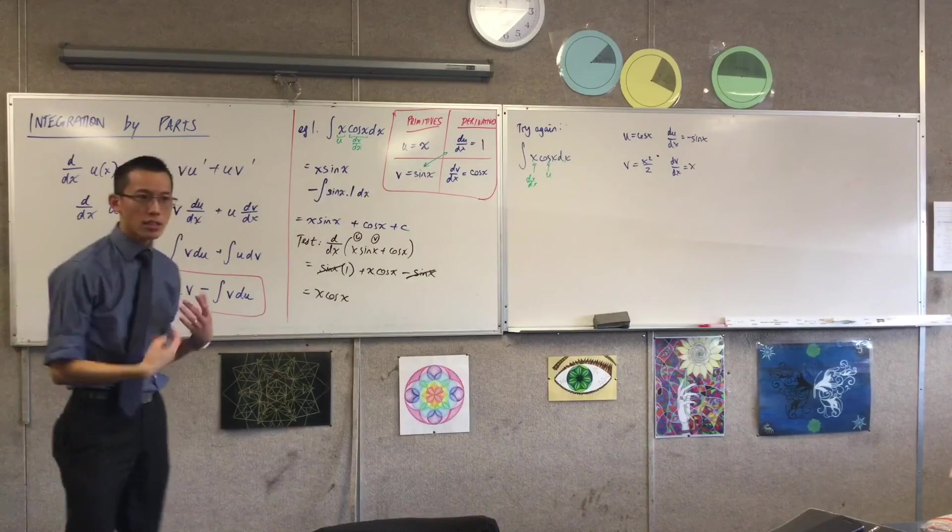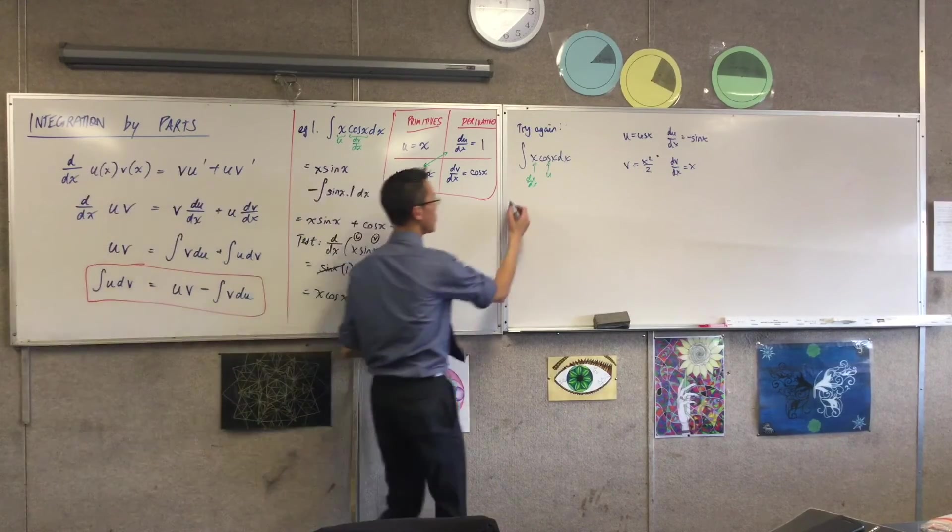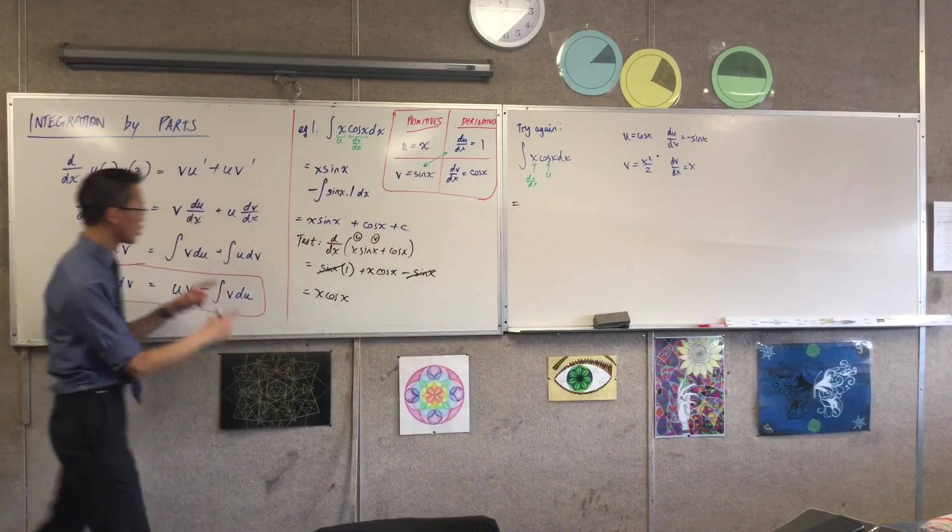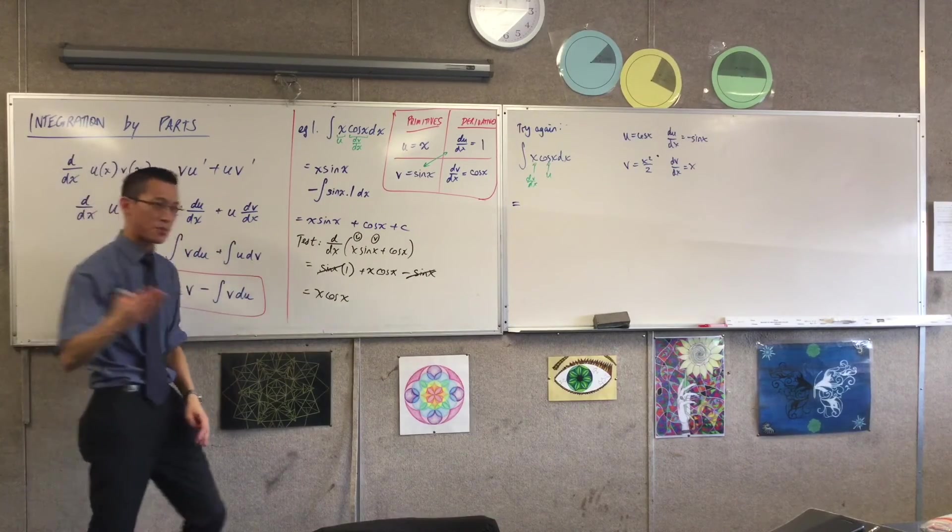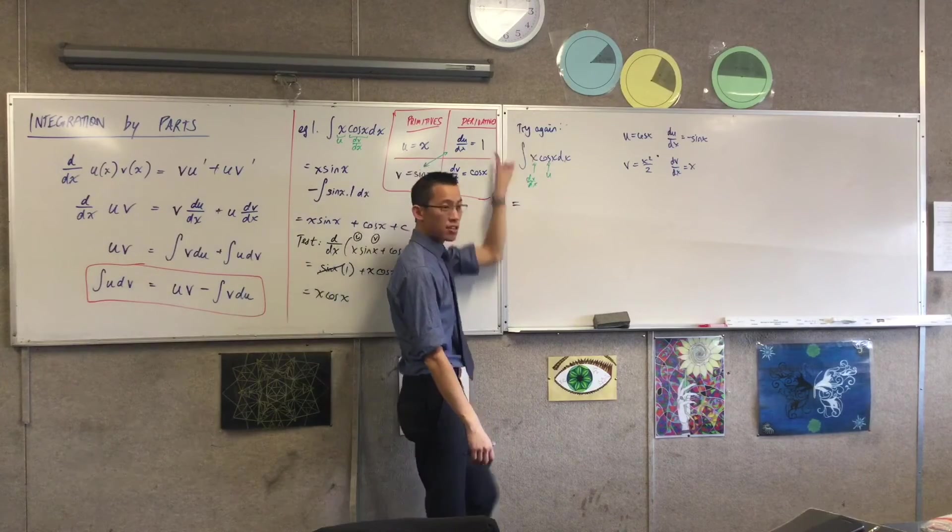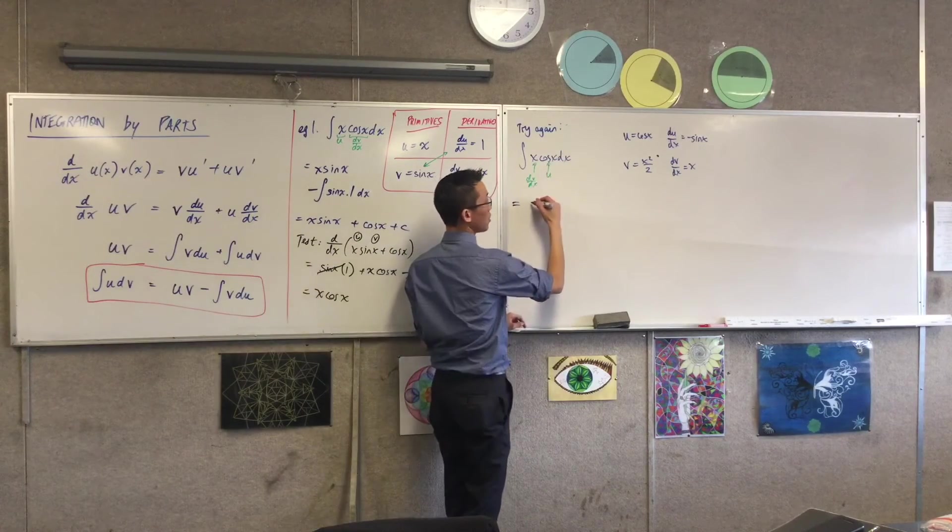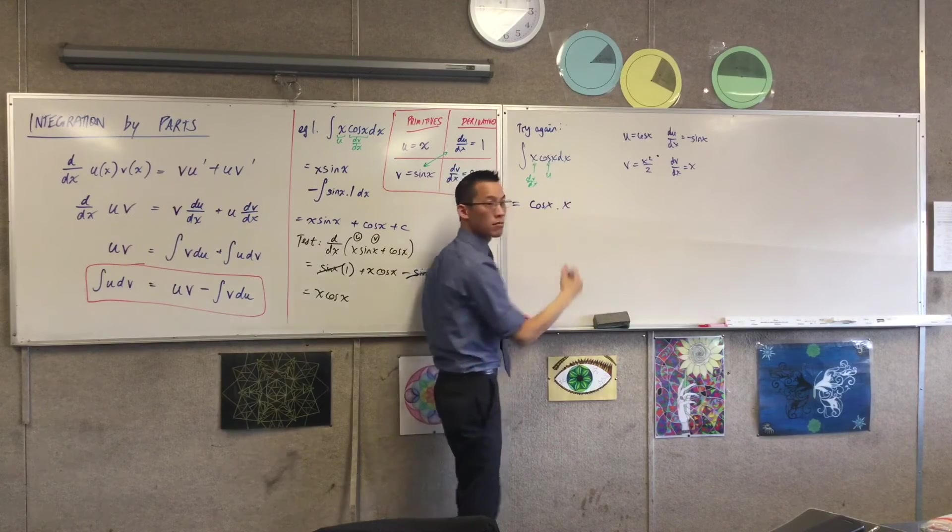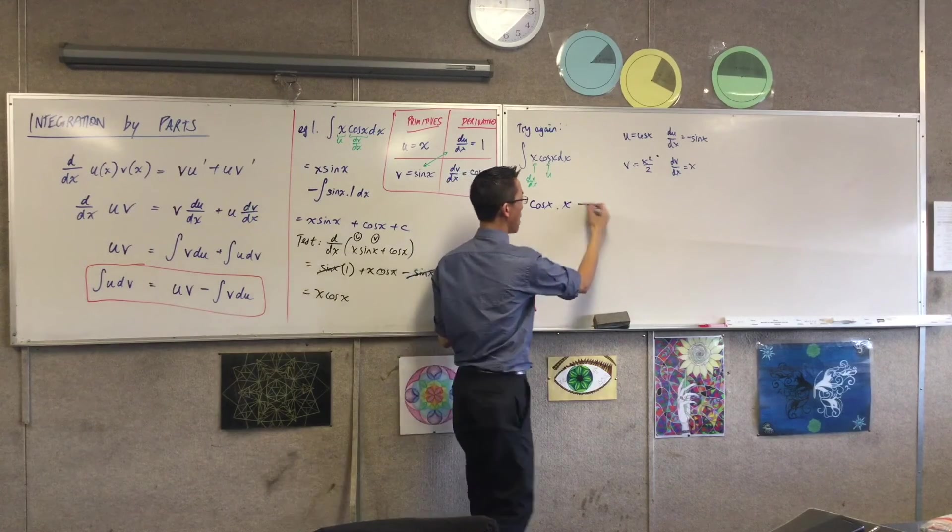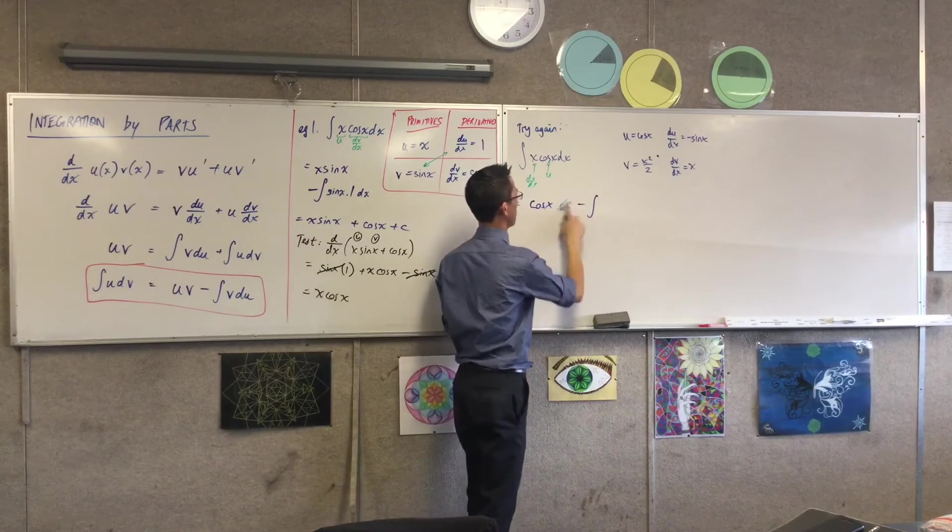Now, it doesn't look immediately obvious why this is a problem, but as soon as I write the next line, actually substitute my parts into here, suddenly it slaps you in the face. Watch. The integral of u dv is u times v. Minus, sorry, that's the wrong one. x squared on two. No, that's v.